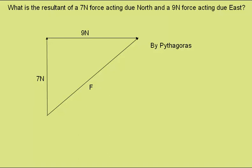We could use Pythagoras, and then the force F would be equal to the square root of this side squared and this side squared. So F is equal to the square root of 7 squared plus 9 squared, which is the square root of 130, which is 11.4N.